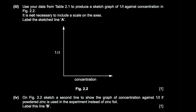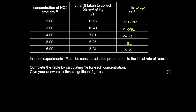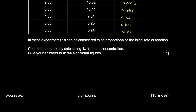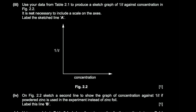Produce a sketch graph of 1/T against concentration. The differences in 1/T are approximately 0.032 for each unit increase in concentration, showing a linear relationship. The graph is a straight line with a positive gradient passing through the origin, labelled line A.